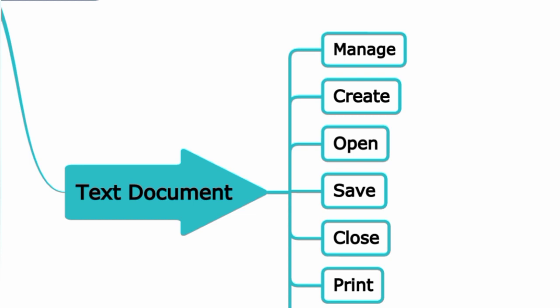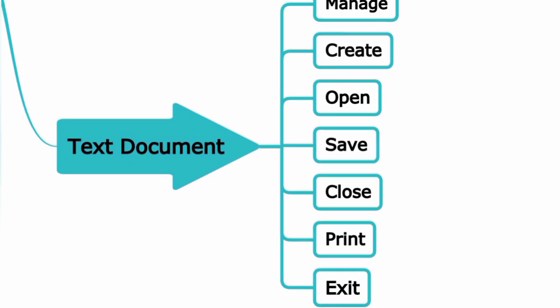Managing a text document: first, creating a new document. Use File > New, or the keyboard shortcut Ctrl+N to create a new document. To open an already existing document, use File > Open command.